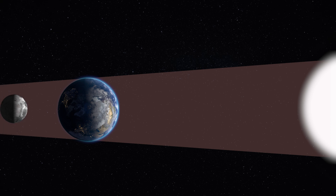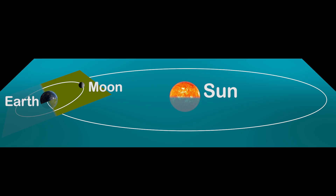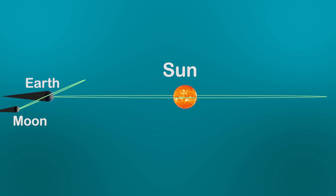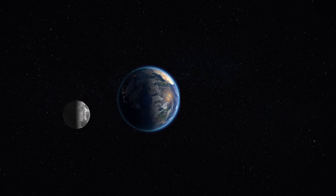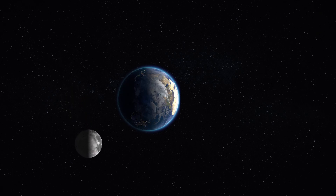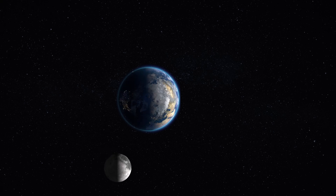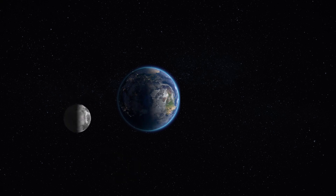We may wonder why the Earth is not blocking the view of the Moon or casting its shadow on the Moon at this location. That is because the orbital plane of the Moon is inclined by 5.1 degrees relative to the line connecting the Sun and Earth, so light rays from the Sun can completely light up the Moon's surface even at this position. As the Moon continues its revolution, we get waning gibbous.